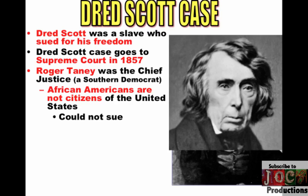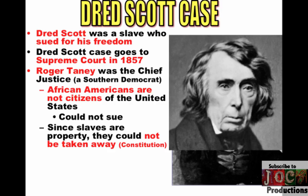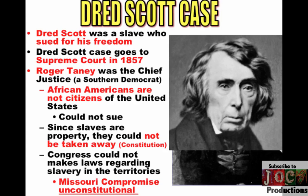One, African Americans are not citizens of the United States, so therefore they could not sue in court. Two, since slaves are property, they cannot be taken away under the Constitution and the Fifth Amendment. Since slaves are property, Congress could not make laws regarding slavery in the territories — owning slaves is protected everywhere because the Constitution says it. The Dred Scott case not only rules that African Americans are not citizens, but also that slavery cannot be banned by Congress anywhere at any time. The Missouri Compromise, already overturned by the Kansas-Nebraska Act, is declared unconstitutional. For Northerners and especially the Republican Party, this is seen as an outrage — the court has now opened slavery in all the territories, potentially.